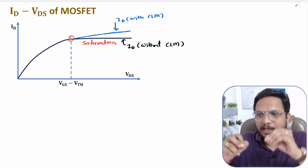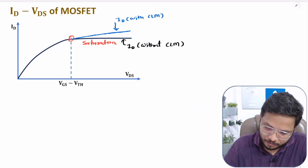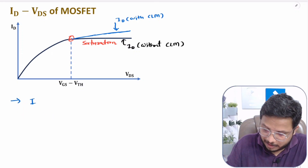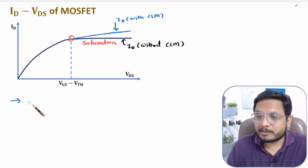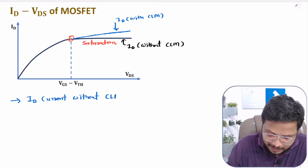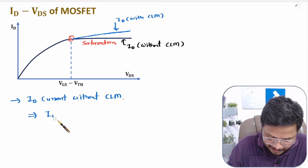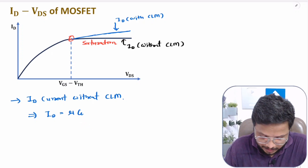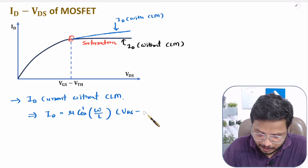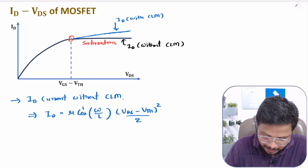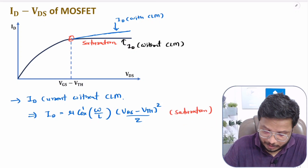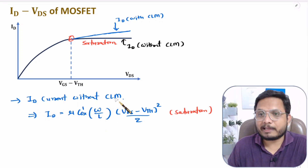Now let me derive the ID current with channel length modulation. The drain current equation without channel length modulation, which I derived in the last video, is: ID = μ·Cox' · (W/L) · (VGS − VTH)² / 2. This is for the saturation region and does not include channel length modulation effects.